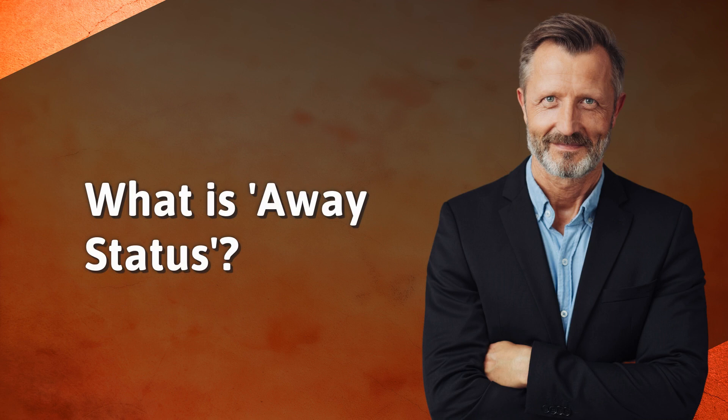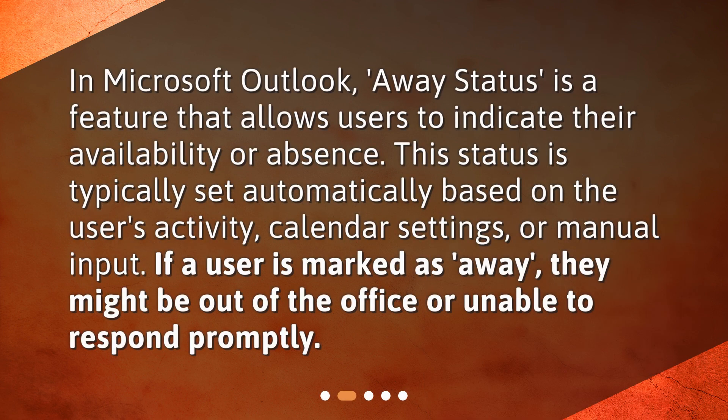What is away status? In Microsoft Outlook, away status is a feature that allows users to indicate their availability or absence. This status is typically set automatically based on the user's activity, calendar settings, or manual input. If a user is marked as away, they might be out of the office or unable to respond promptly.